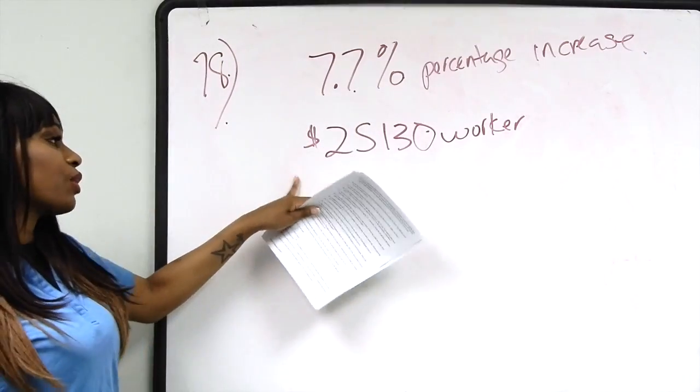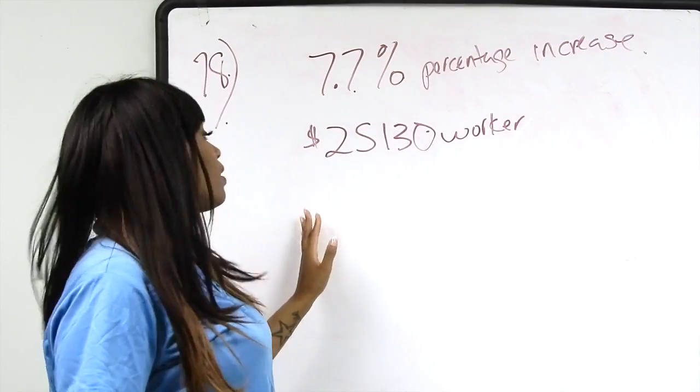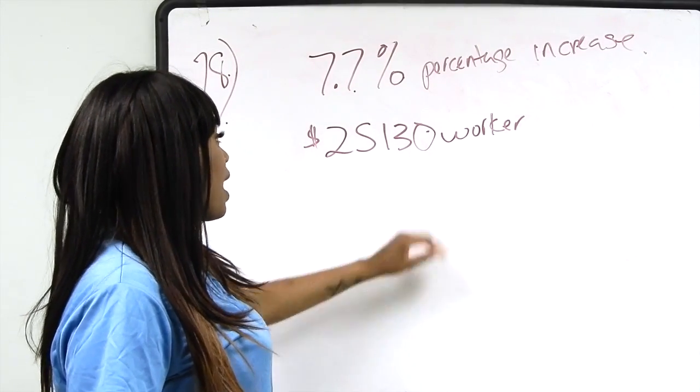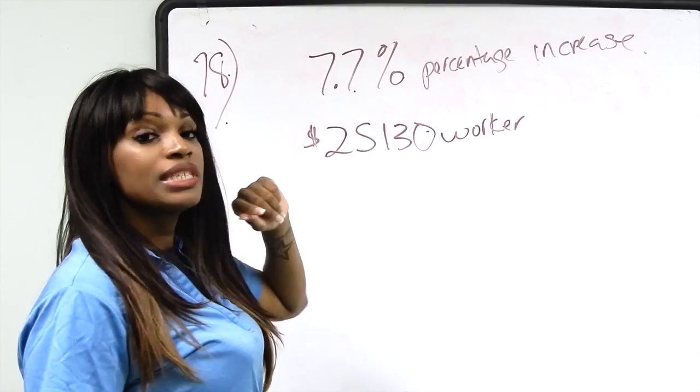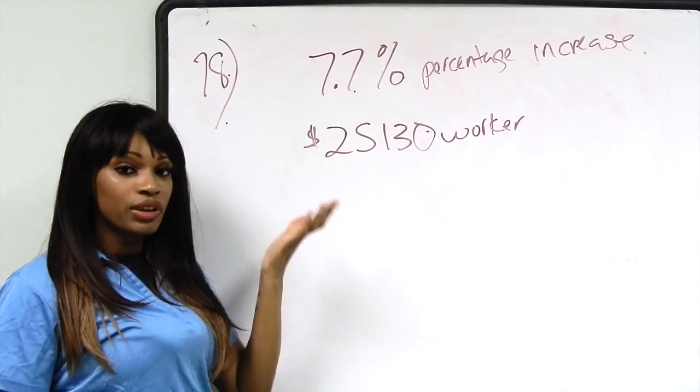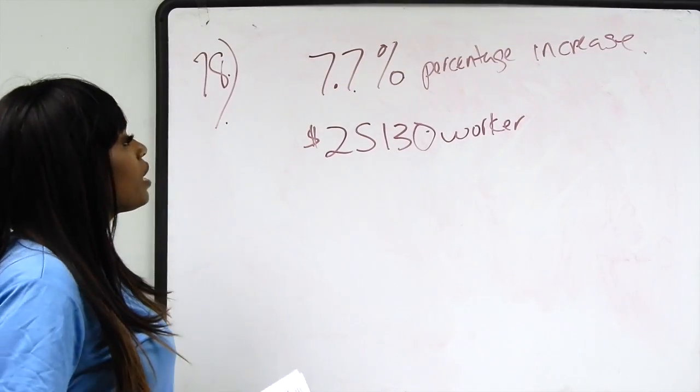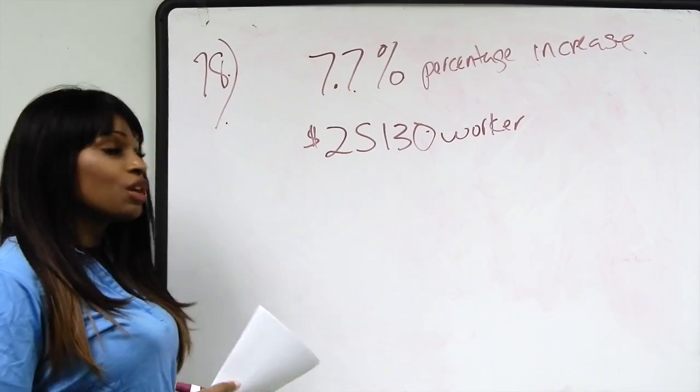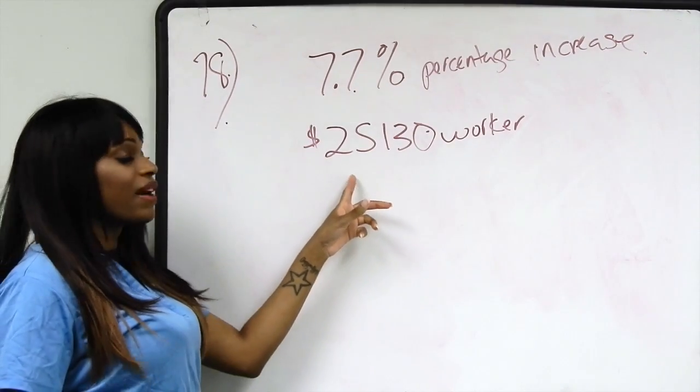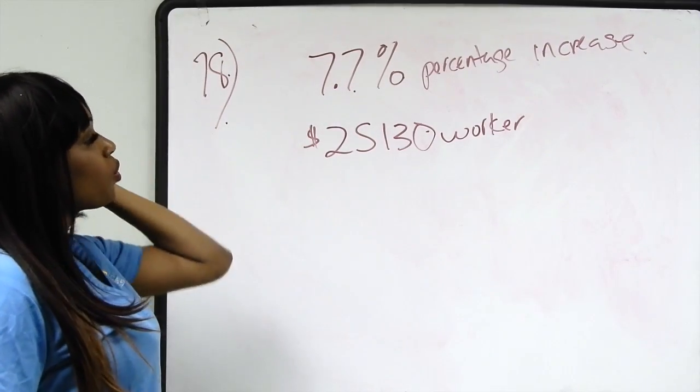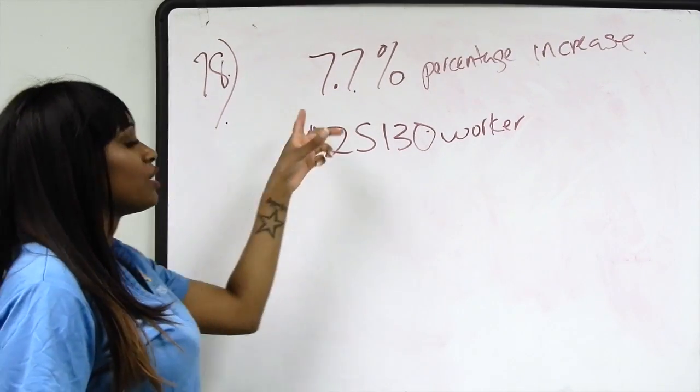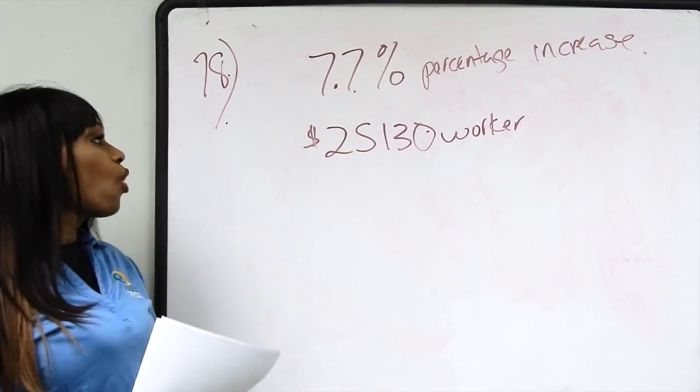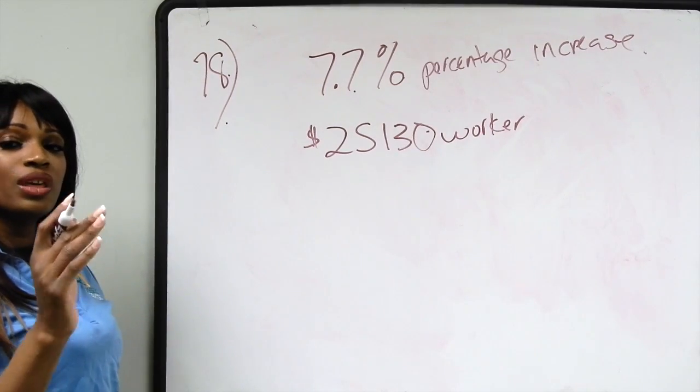So we want to find out this worker's new salary. We can take the salary of this current worker, $25,130, and multiply it times 7.7% to find out the increase in the amount of money that they're receiving. And because this is a percentage, we need to convert the percentage to a decimal before we can multiply it by $25,130. So in order to convert the percentage to a decimal, we can simply divide 7.7% by 100 or we can simply move two places to the left.